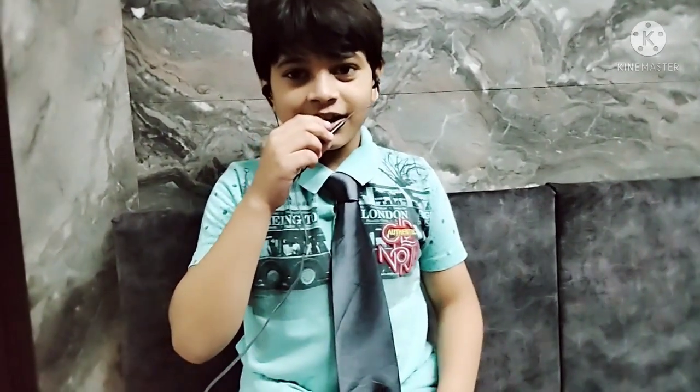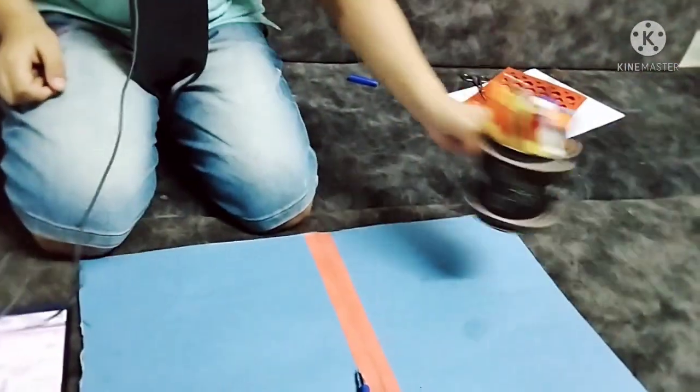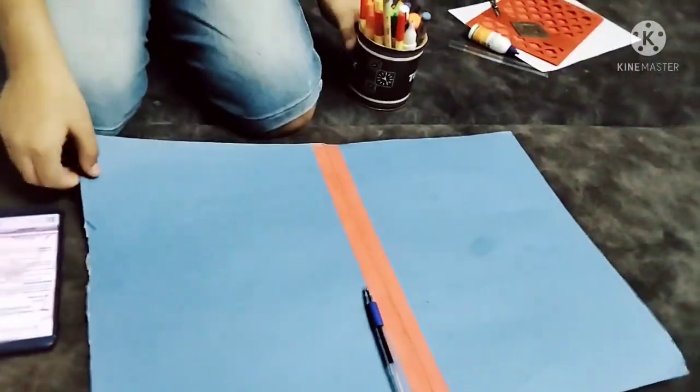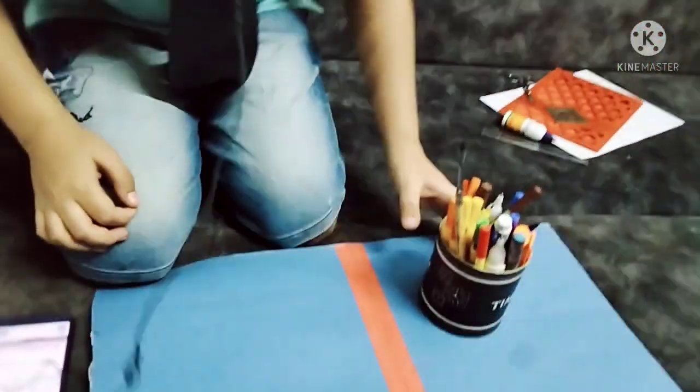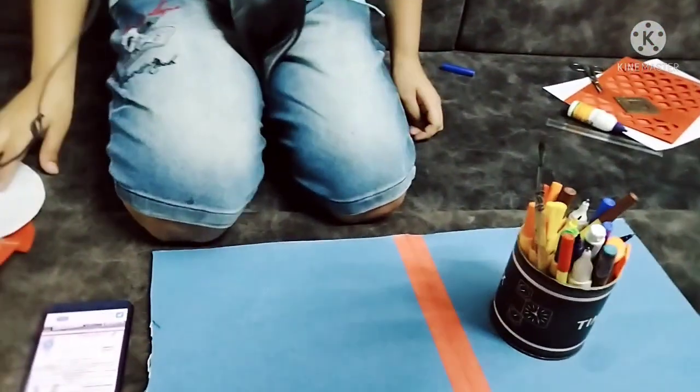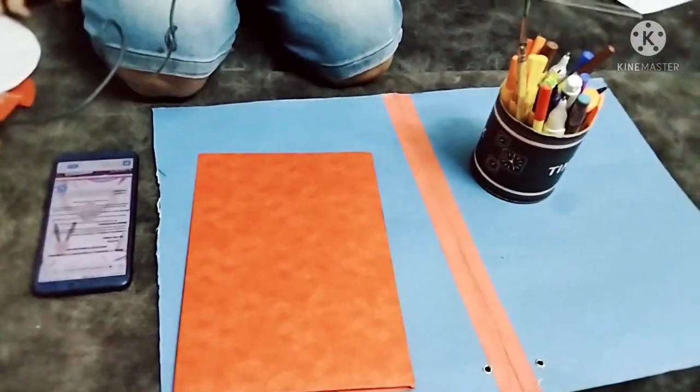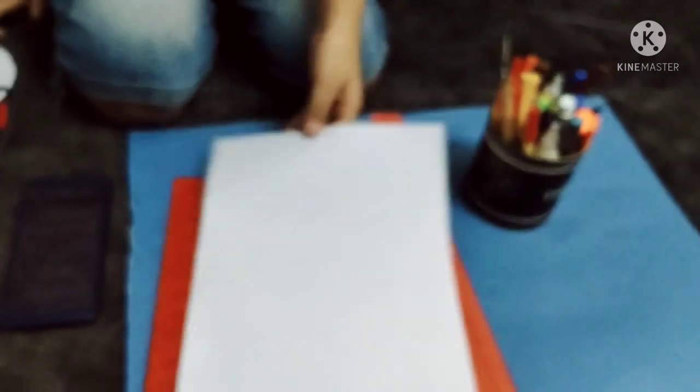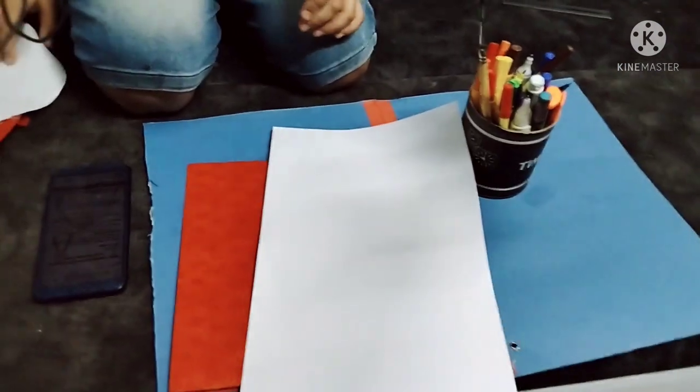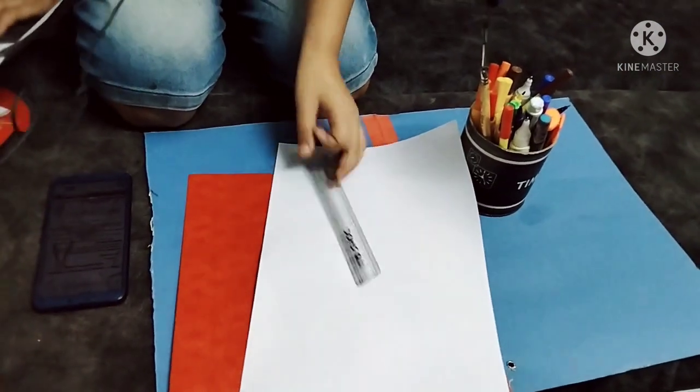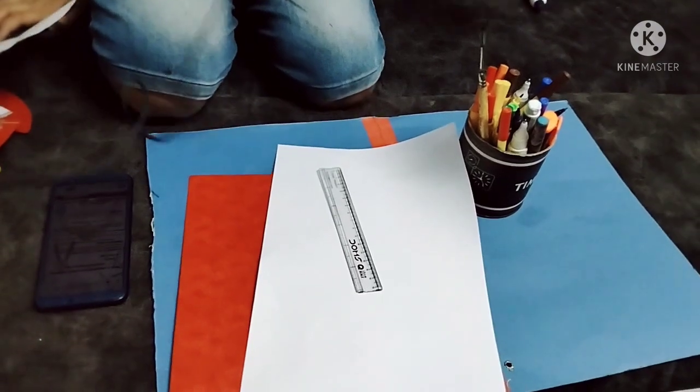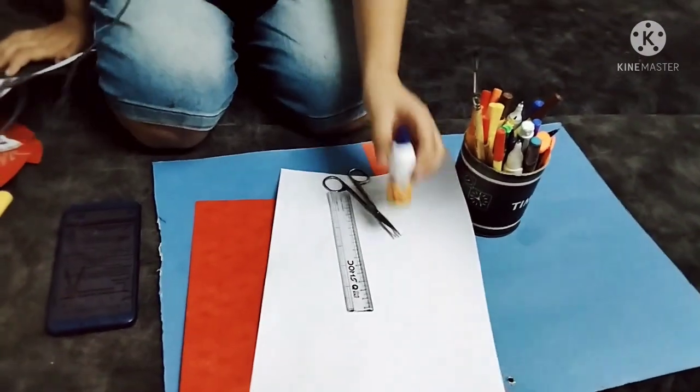We can use materials like blue sheets and sketches, red paper, white paper, scale and scissors, and glue.